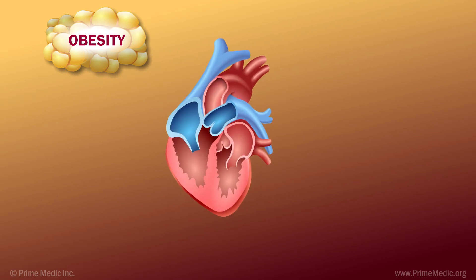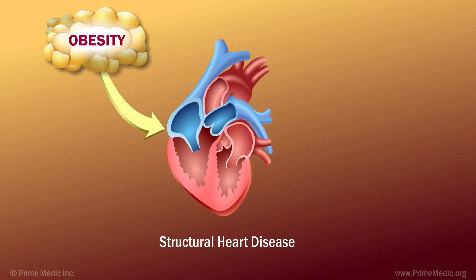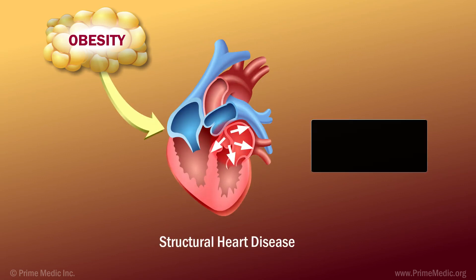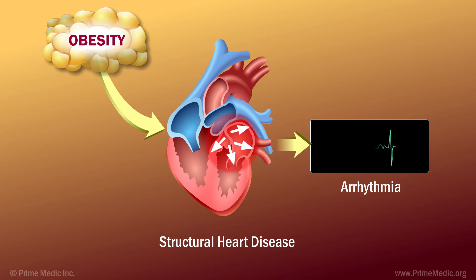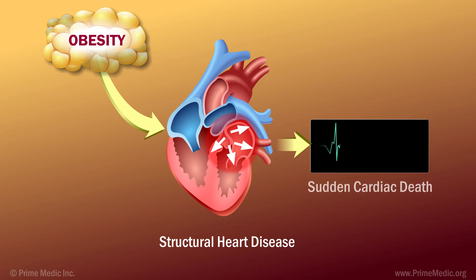Obesity is associated with changes in the autonomic control of cardiac rhythm. There is a decrease in the activity of the sympathetic nervous system and a decrease in heart rate variability. The latter is a predisposing factor to sudden cardiac death.